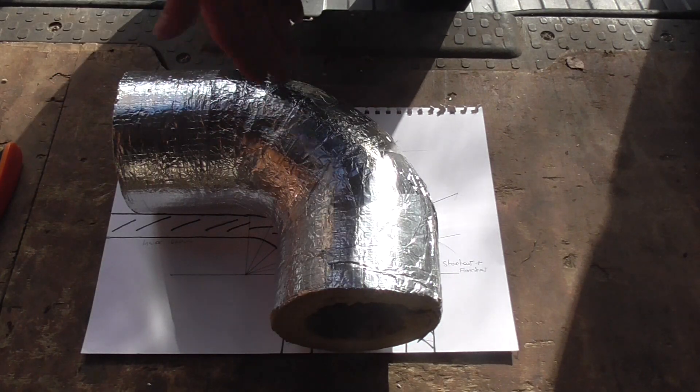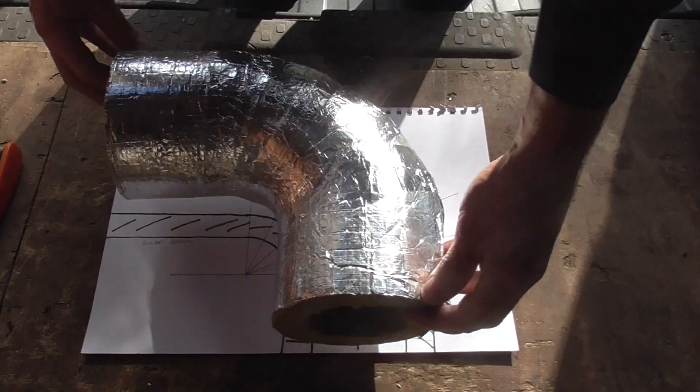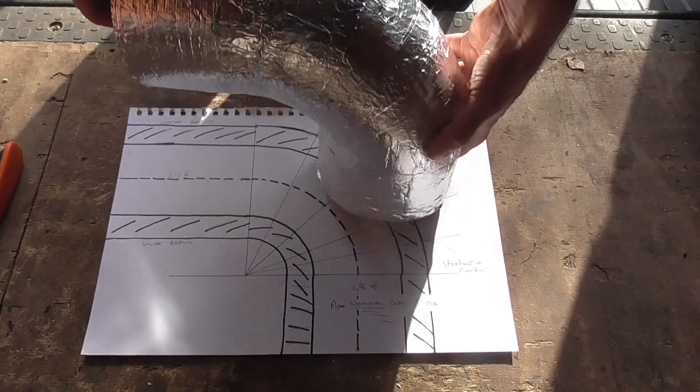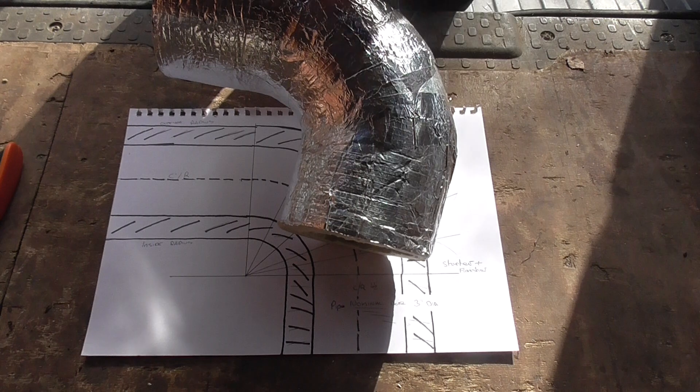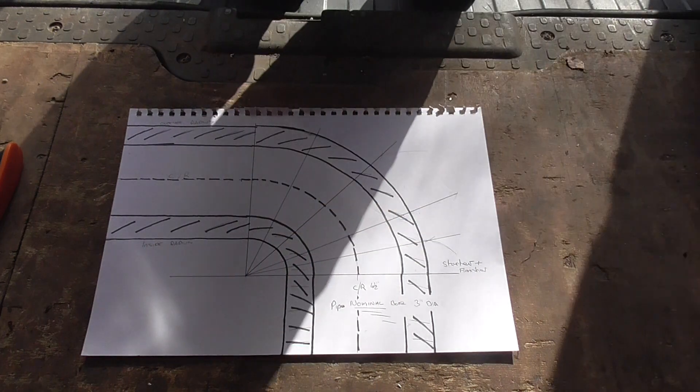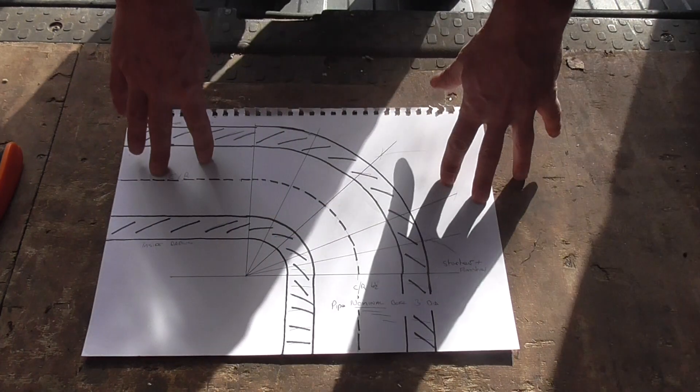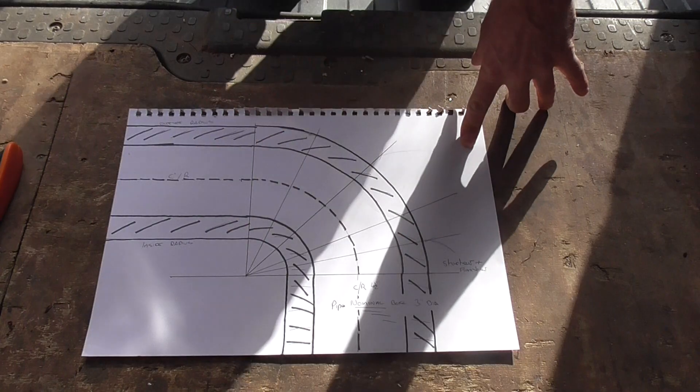This is one that I prepared earlier. So we've got a 90 degree three hand bend. It has three segments at the start and the finish. Let's just smooth that out of the way. What we've got here, this is a plan view of that bend.